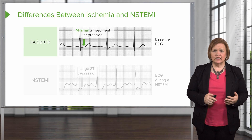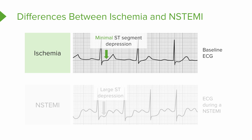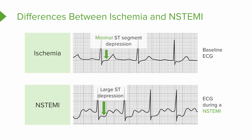Now let's look at when things go wrong. Minimal ST-segment depression is a sign of ischemia — just a little dip from baseline. In a non-STEMI, there is a much more significant ST-segment depression; that's what you would see on an EKG during a non-STEMI. Keep in mind, while evaluating the EKG we're also drawing lab work and looking at multiple pieces to put this puzzle together.